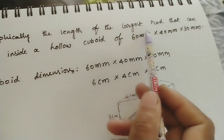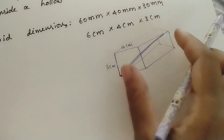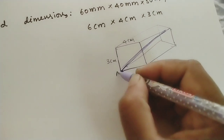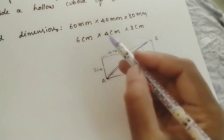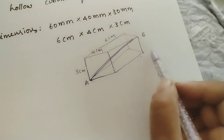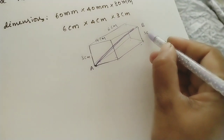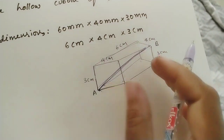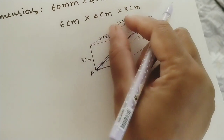Find graphically the length of the largest rod that can be kept inside a hollow cuboid. This rod length we need to find graphically, and for that we need to do the projections. Let us take this rod — one end is capital A and the other end is capital B. According to the dimensions: 3 cm height, 4 cm width, and 6 cm length — all faces have consistent dimensions, so the wall height is 3 cm everywhere, the width is 4 cm, and the length is 6 cm.